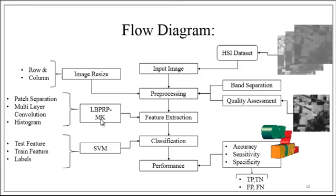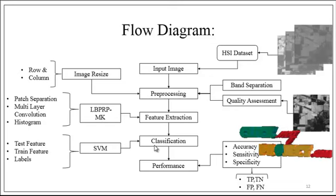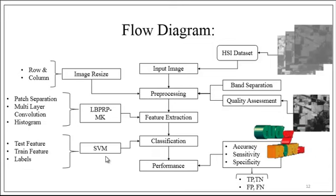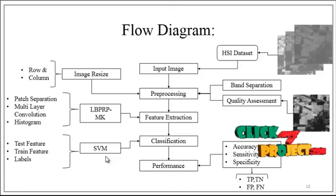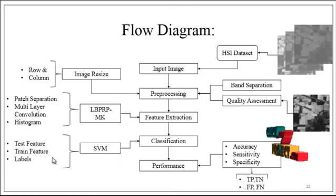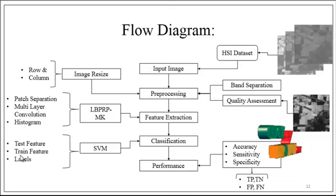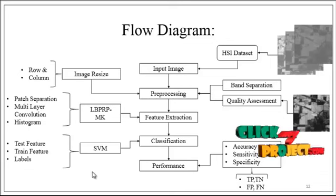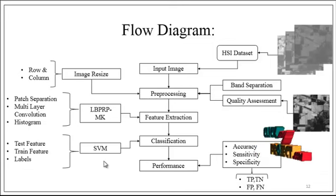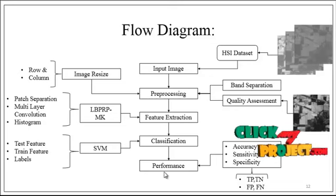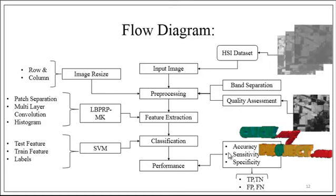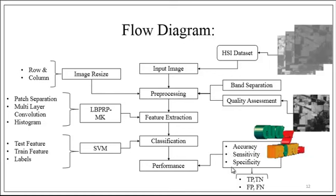After extracting the features, we move on to the classification. In this classification, we use the SVM classifier to classify the bands as well as the land regions separately. There are three kinds of inputs to be given to the SVM, and using these features we are able to classify the type of lands. After getting the results, the final stage is performance evaluation, where we calculate accuracy, sensitivity, and specificity.